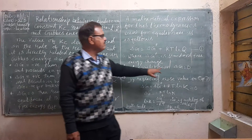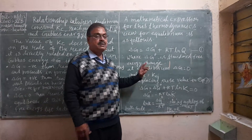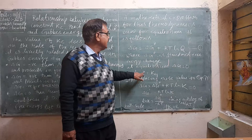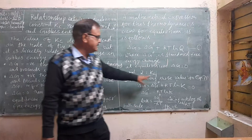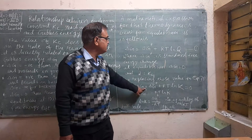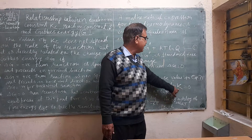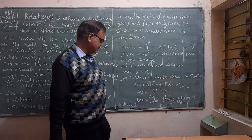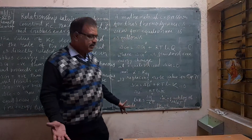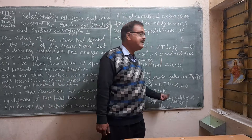At equilibrium, we know delta G is equal to zero, and ln Q becomes ln Kc, since at equilibrium the reaction quotient Q is equal to Kc. Replacing these values in equation 1, we have: zero equals delta G naught plus RT ln K, which gives us delta G naught is equal to minus RT ln K, where K is the equilibrium constant.